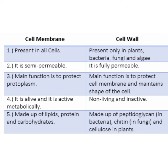Now we'll talk about the cell membrane in detail. Cell membrane is also known as plasma membrane. Each cell is bounded by a thin, delicate, skin-like membrane called the cell membrane or plasma membrane. It is also known as a selectively permeable membrane because it allows only selective substances to pass through it — those that are useful for the cell.